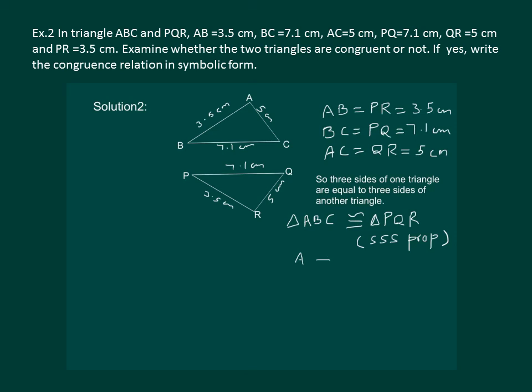Also from the three equalities we can see that A should correspond to R, vertex B should correspond to vertex P, and vertex C should correspond to vertex Q. So ABC should correspond to RPQ in order for the two triangles to be congruent.